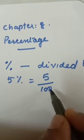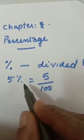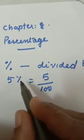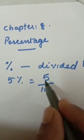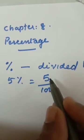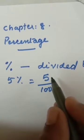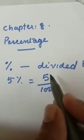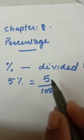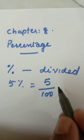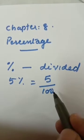If the denominator is 100 then you can say numerator percentage. Percentage meaning divided by 100. If denominator is 100 then you can say 5 numerator percentage. If denominator is not 100 then you cannot say that number percentage. So whenever denominator is 100 then you can write numerator percentage. Whenever you see percentage, that means divided by 100.